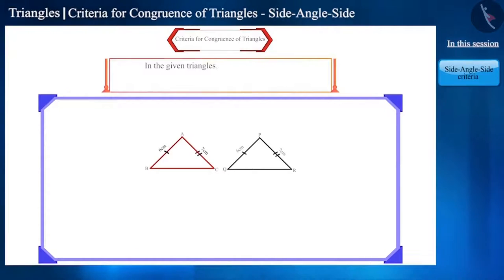In triangle ABC and triangle PQR on the screen, both the sides AB and PQ are 6 cm and sides AC and PR are 7 cm. So will two triangles be congruent if the two sides of any two triangles are equal?